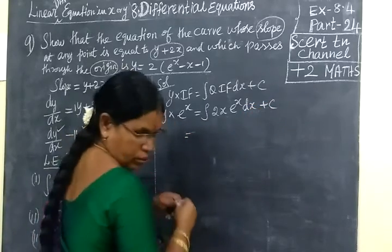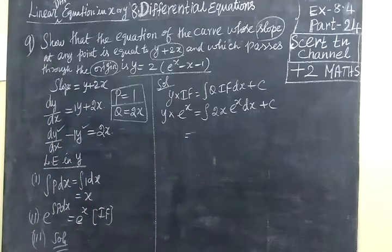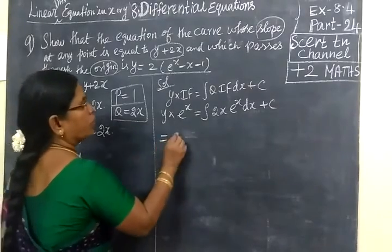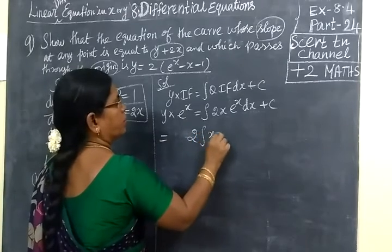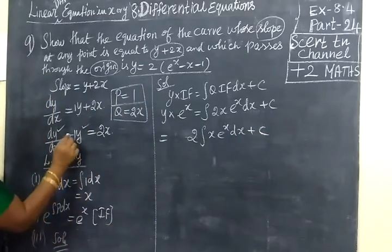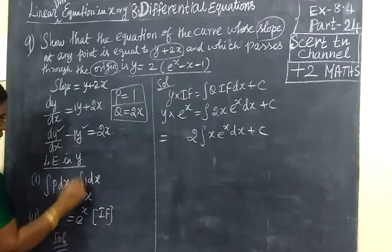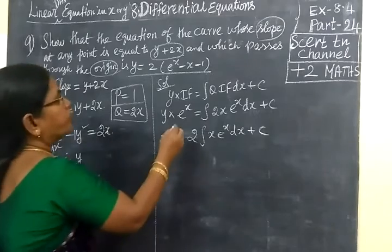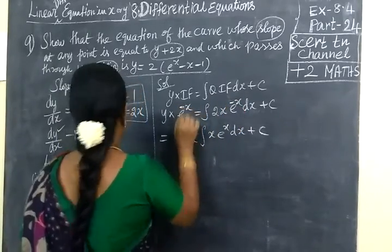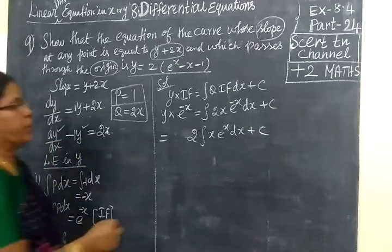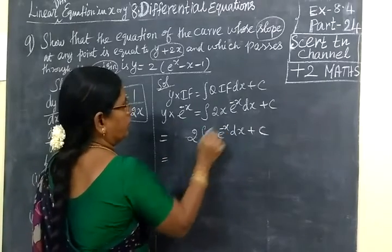Take 2 common outside. So we have 2 times integral x into e power -x dx plus c. Here we apply the Bernoulli method because of the minus sign.